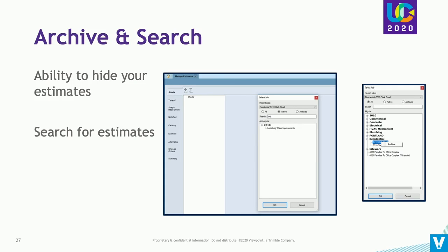Also in estimating, we've added the capability to hide your estimates and clean up your select job list, and also to search for estimates. You can right-click on an estimate and choose to archive it. Archive doesn't move or remove it from the database — the data is all there — we just remove it from that list to make it easier to manage your open active estimates. We've also added a search capability at the top of that screen so you can start typing the name of an estimate and it will automatically filter the list for you.